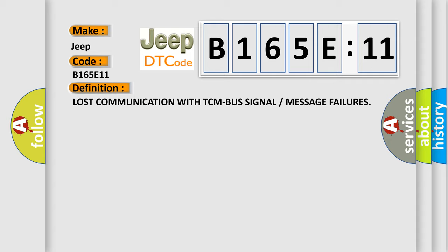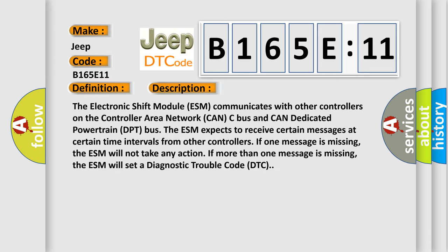And now this is a short description of this DTC code. The electronic shift module ESM communicates with other controllers on the controller area network CAN-C bus and CAN dedicated powertrain DPT bus. The ESM expects to receive certain messages at certain time intervals from other controllers. If one message is missing, the ESM will not take any action. If more than one message is missing, the ESM will set a diagnostic trouble code DTC.